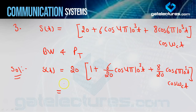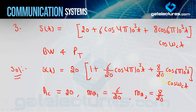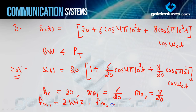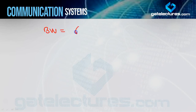Standard AM से compare करने पर: Ac = 20, Ma1 = 6/20, Ma2 = 8/20. FM1: 4π×10³ को 2π से divide करो = 2×10³ = 2 kHz. FM2: 6π×10³ को 2π से divide करो = 3×10³ = 3 kHz. FC unknown है — leave करो. Bandwidth = 2·FM (highest FM in multi-tone) = 2×3 = 6 kHz.